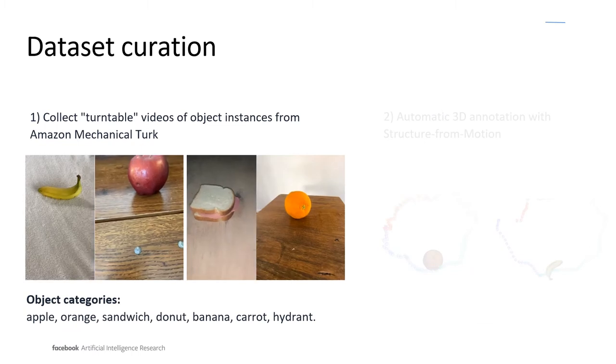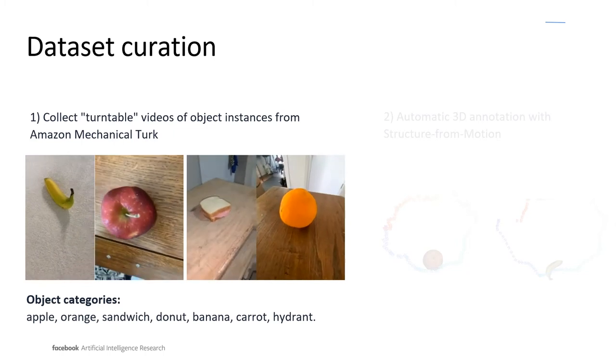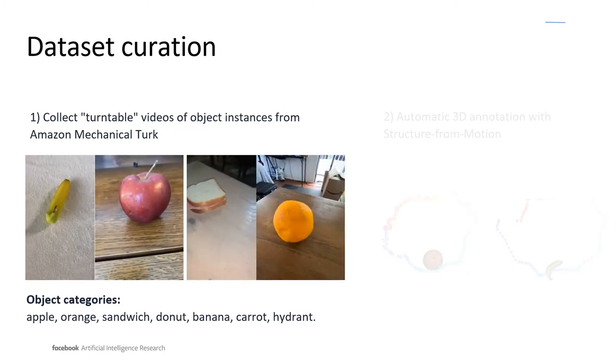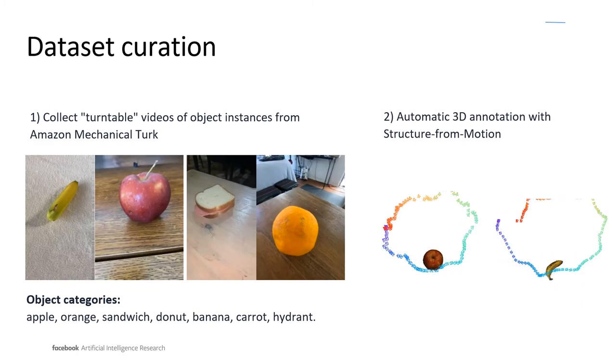As currently no appropriate dataset exists for our task, we introduced the AMT objects dataset, a large collection of object-centric videos that we collected using Amazon Mechanical Turk. In a second step, we post-processed the raw videos autonomously using structure from motion in order to retrieve 3D annotations.